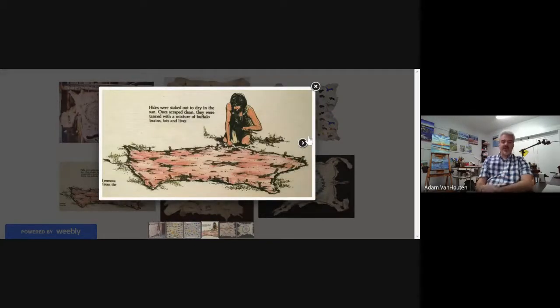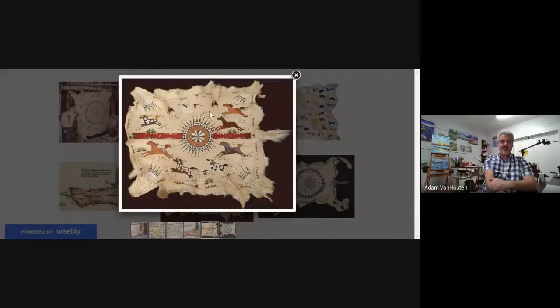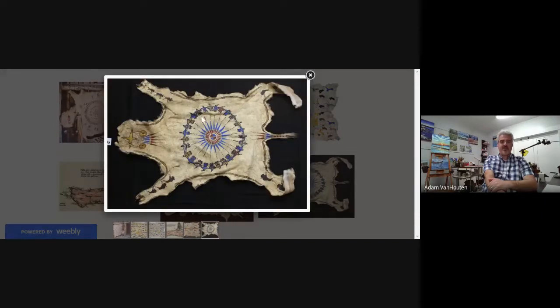And so here's a really interesting fact about buffalo hides. They were staked out to dry in the sun so they put stakes in them and then it's kind of gross but I guess it's an intriguing interesting fact. Once the hide was scraped off they were tanned with a mixture of brains, fats, and liver from the buffalo. Yeah kind of interesting. So that they left out in the sun they would dry like that and they kind of looked like this tan color like a piece of paper.